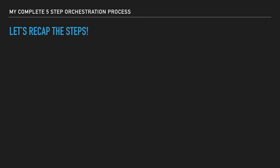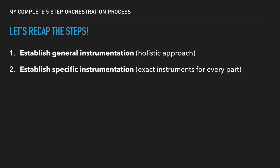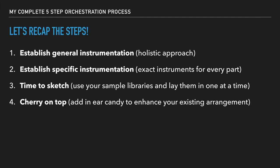Let's quickly recap those five steps. Number one is to establish the general instrumentation — you can write this out in a notes app or on your computer. It's a holistic approach where you're basically saying: I want the melody to be in the strings, I want the accompaniment to be brass and percussion. Then step two is to be more specific: do I want the melody in the violins, the violas, or the cellos? Then you lay out those exact instruments for each part. Step three: start to sketch out in your DAW, use your sample libraries, lay them in one at a time, try to play them in live, use your mod wheel, fiddle with the velocities, and make sure it sounds as realistic as possible. Then step four, we add the cherry on top — listen back a couple of times and ask yourself what could take the track even further. That could be woodwind runs, string runs, trills, glissandi, whatever is appropriate for the context.